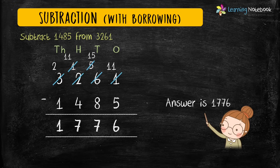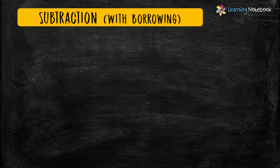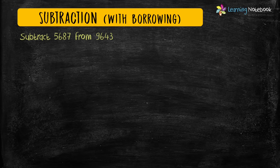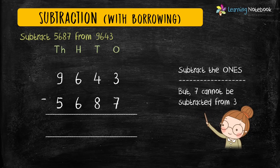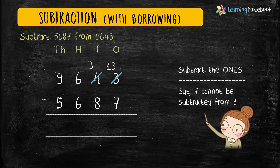Now students, let's do one more example. The question is: subtract 5687 from 9643. Let's write them in columns. Now subtract the digits at ones place. But 7 is bigger than 3, so it cannot be subtracted from 3. Therefore, let's borrow from tens place, so 4 becomes 3 and 3 becomes 13. Now we can easily subtract 7 from 13 and we get 6.